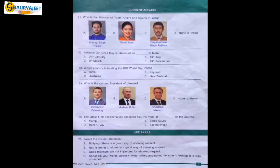Let's move to the next section: Current Affairs. Question 21: Who is the Minister of Youth Affairs and Sports in India? Options are Anurag Singh Thakur, Smriti Irani, Rajyavardhan Singh Rathore, none of these. Option A, Anurag Singh Thakur, is correct. Smriti Irani is the Child and Women Welfare Minister, and Rajyavardhan Singh Rathore is the Industrial Policy Minister in India.